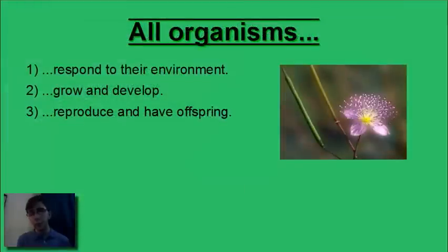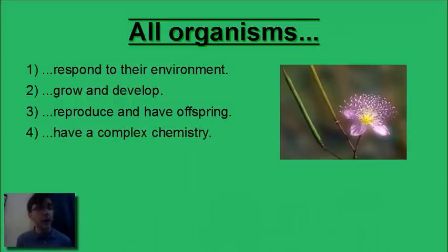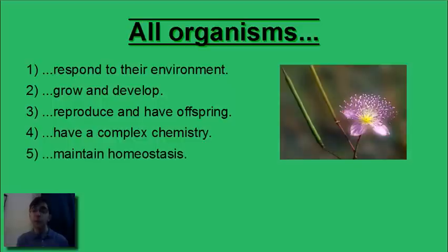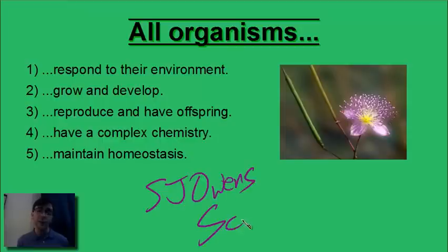So that about wraps up what we'll talk about for growth and development and reproduction in offspring. Join us next time whenever we talk about how all organisms have a complex chemistry and maintain homeostasis. This is S.J. Owens Science, and I hope that you take the time to check out some of the other videos. Thanks for watching.